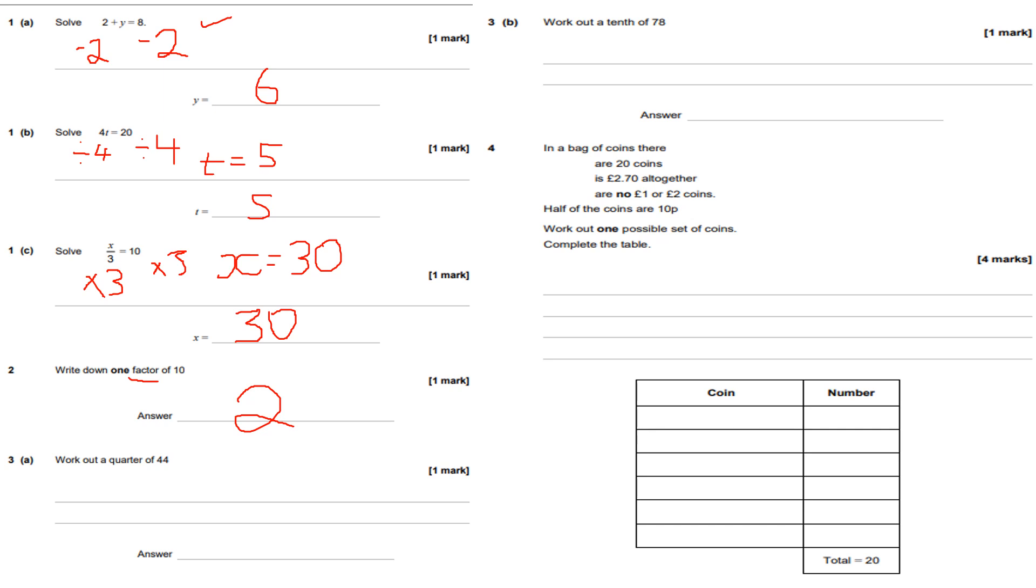Question number three, part a: work out a quarter of 44. Write it out as a fraction of an amount: a quarter of 44. A quarter of something in maths means divide it into four equal parts. 44 divided by 4. You can half it and then half it again. Half of 44 is 22, and then half of 22 is 11. So 44 divided by 4 is 11.